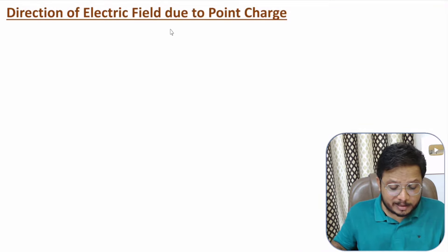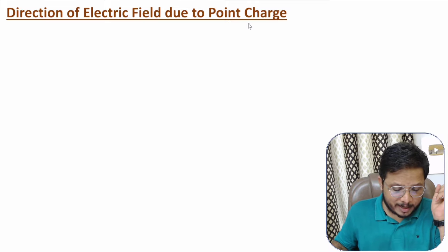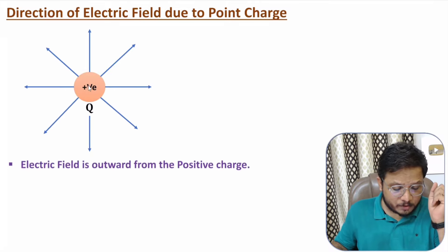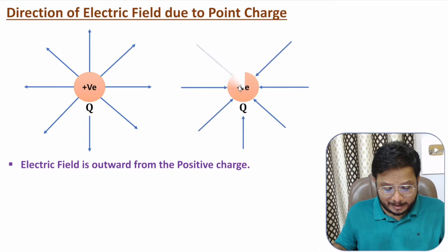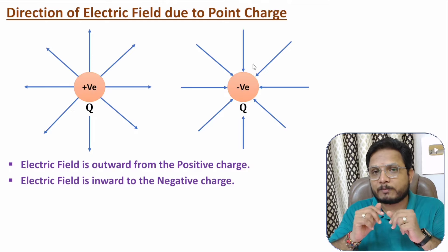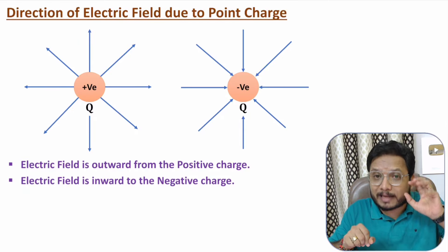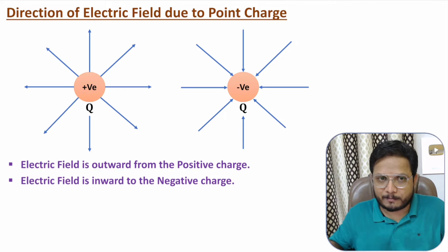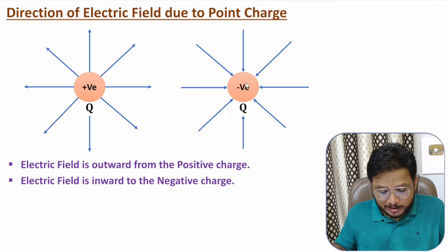Now I'll explain direction of electric field due to point charge. A charge can be positive or negative. If we have a positive charge, you will observe the electric field in the outward direction from the charge. If you have a negative charge, the electric field will be in the inward direction toward the charge. Based on polarity of charge, the direction of electric field is determined. From positive charge, electric field is emerging outward, and from negative charge, electric field is getting enclosed inward, as you can observe here.